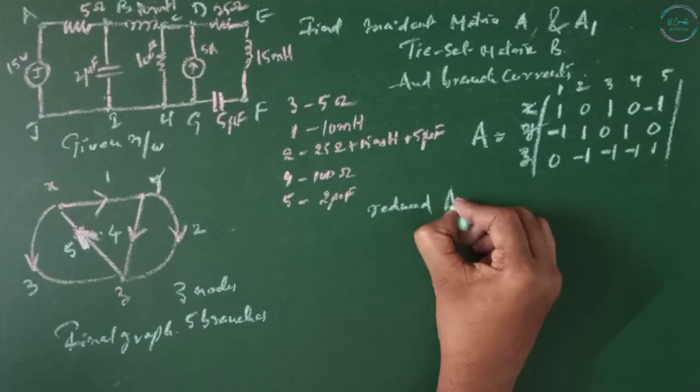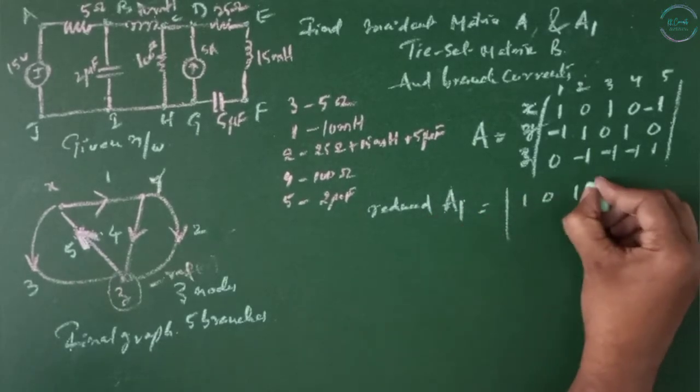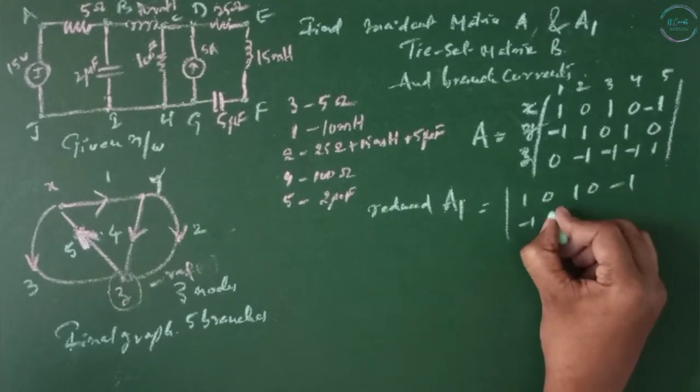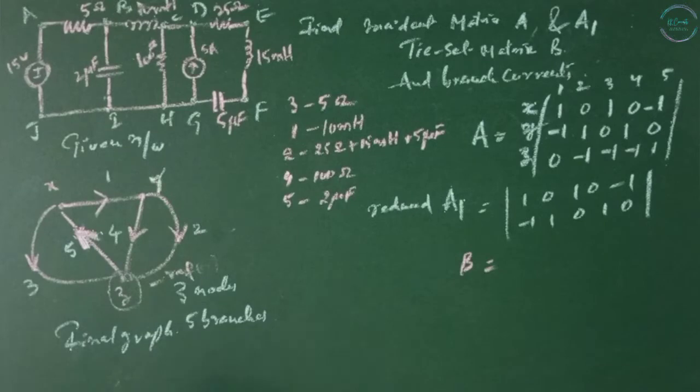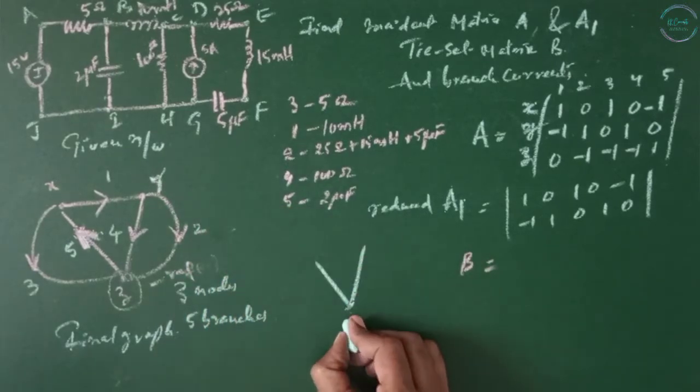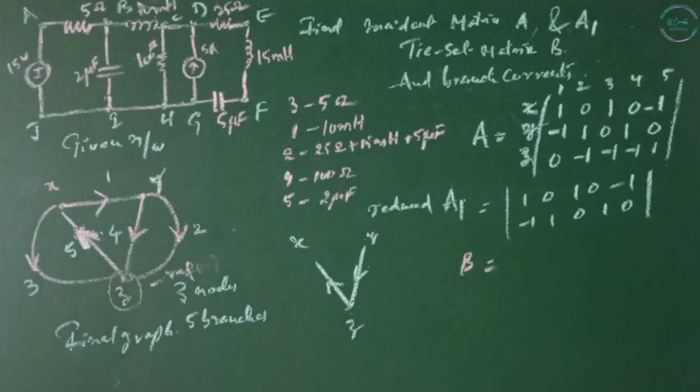Reduced incident matrix A1: deleting the last row will get 1 0 1 0 -1, -1 1 0 1 0. Matrix B to find this we need to form a tree. Let this be a tree Z X Y then the links.